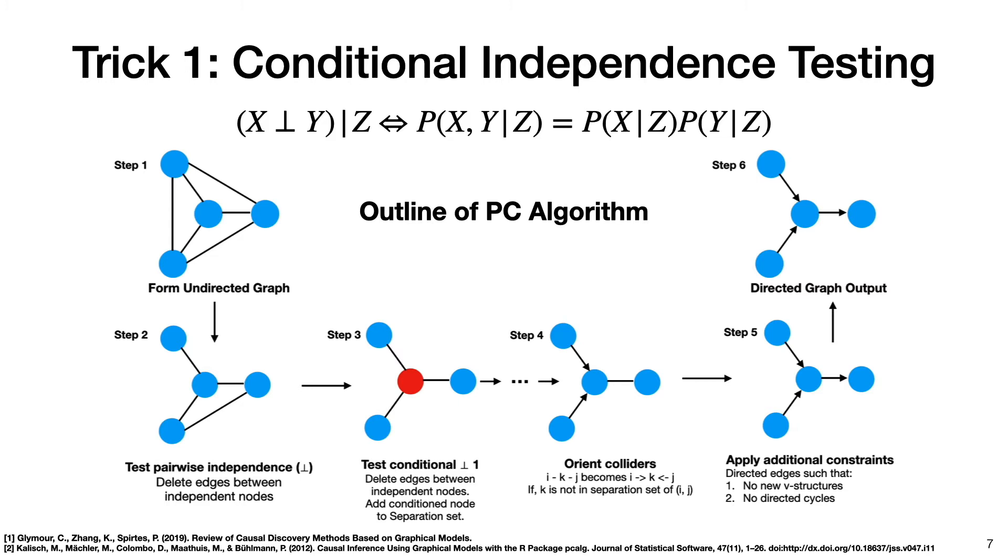And we continue these conditional independence tests until there are no more candidates for conditional independence testing. Then in step four, we orient different colliders. So if we have three variables, say i, j, and k, we form a collider out of them, meaning we make directed edges pointing from i to k and j to k, given k is not in the separation set of i and j. Then in step five, we add more directed edges to the graph following two constraints. Namely, we do not create any new v structures in our graph, nor do we create any directed cycles. And hopefully after all that, we output a directed acyclic graph, which represents the causal connections of our system. Again, more details on the blog and the two references at the bottom here have a great description of the PC algorithm.